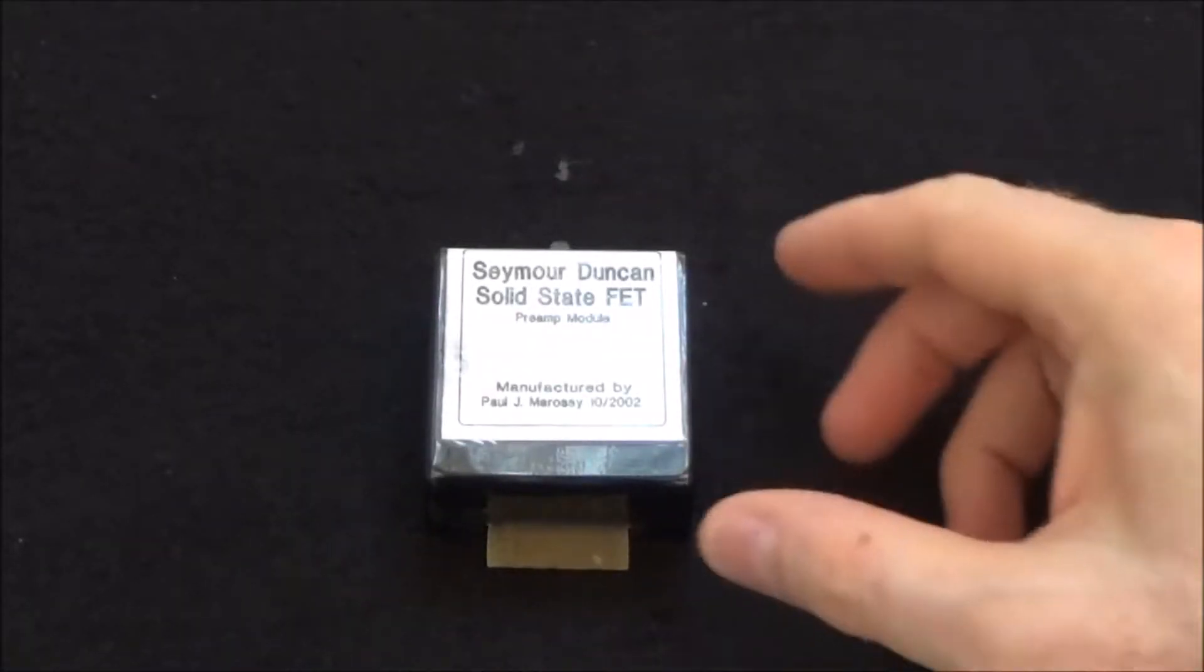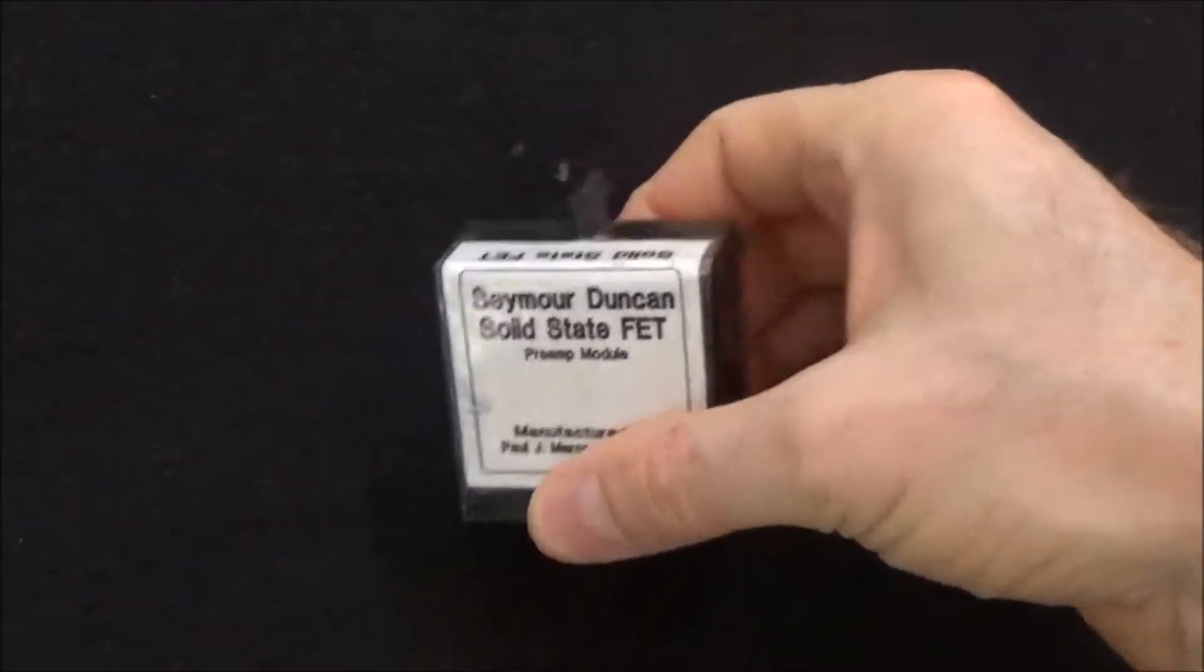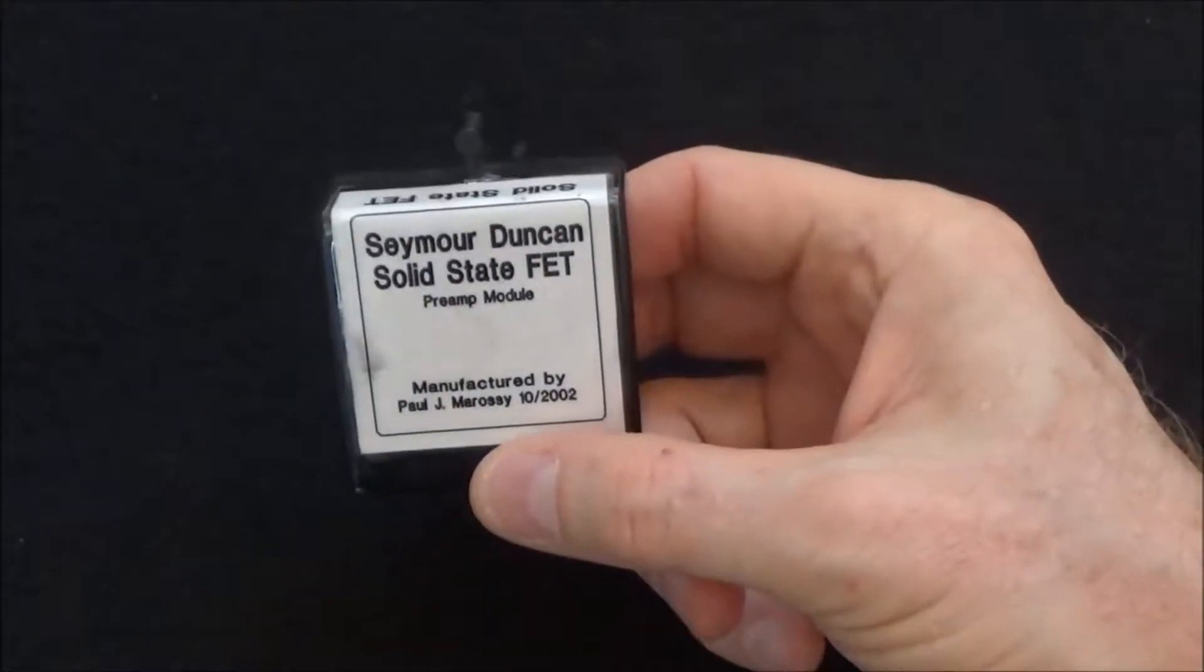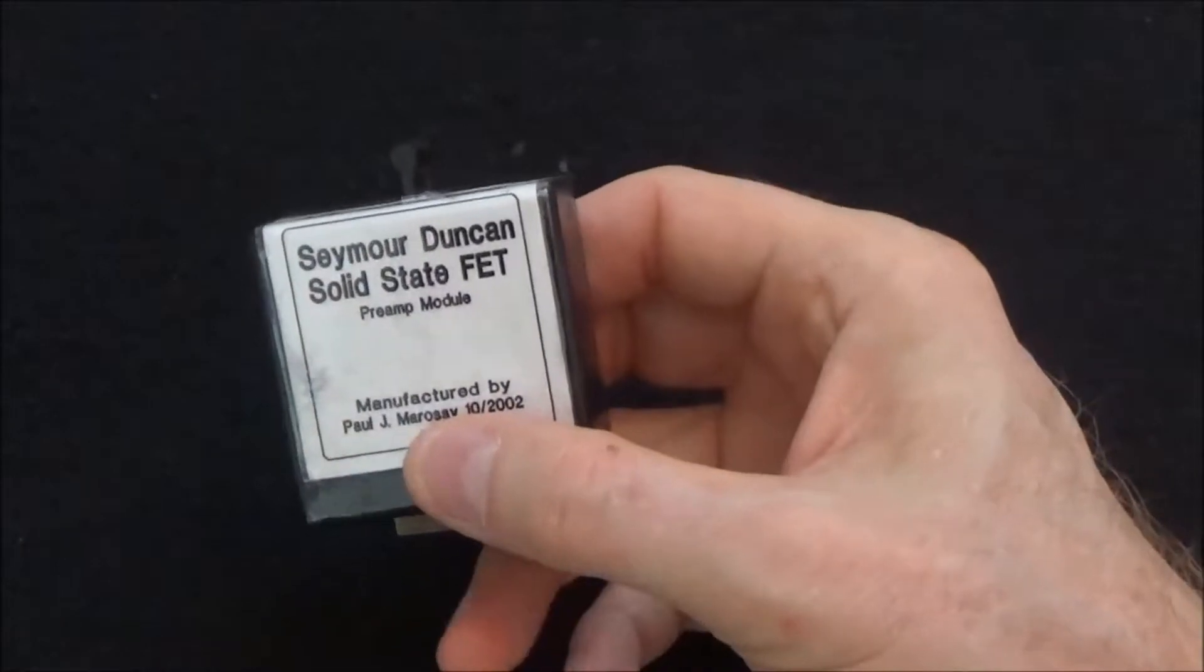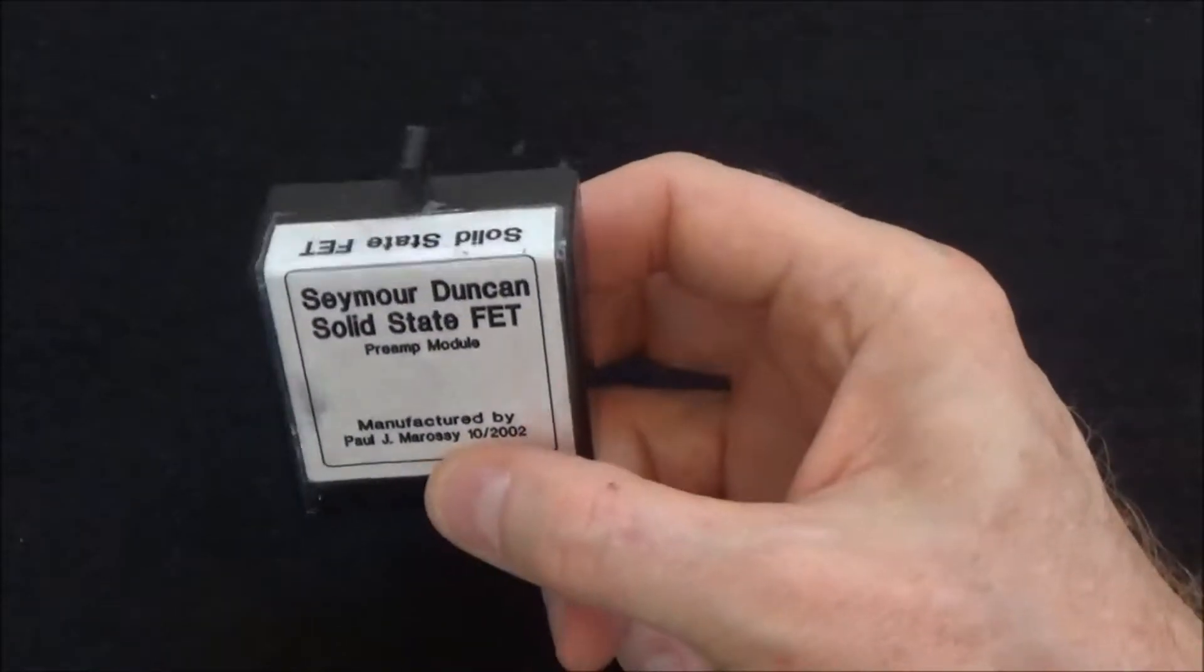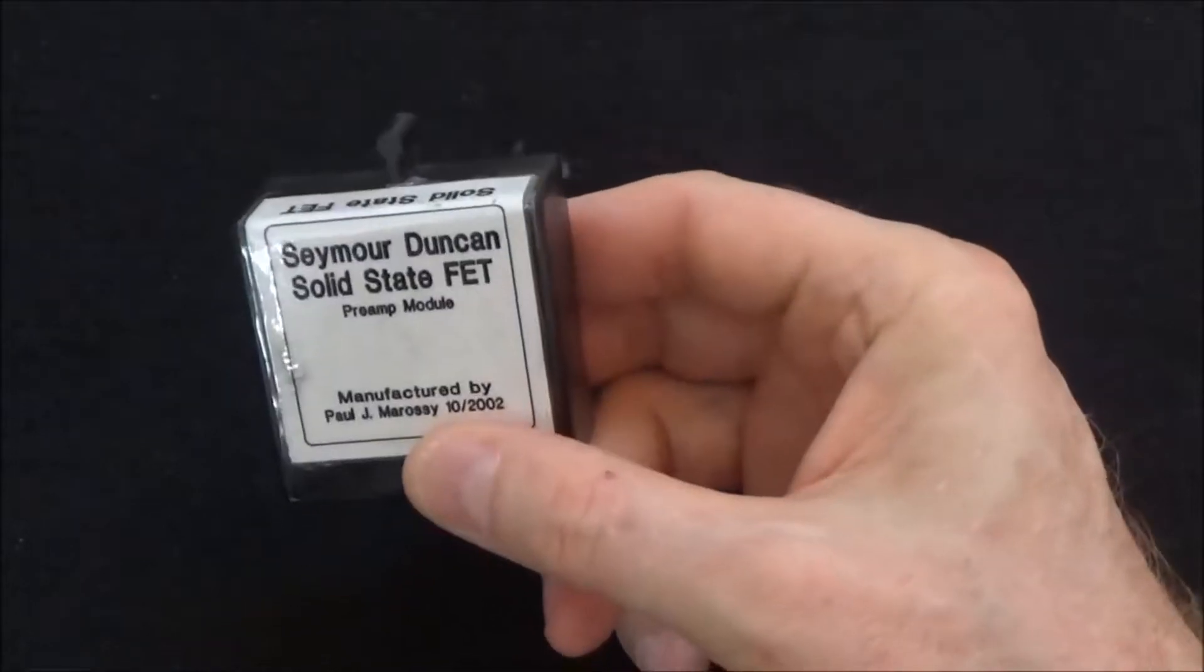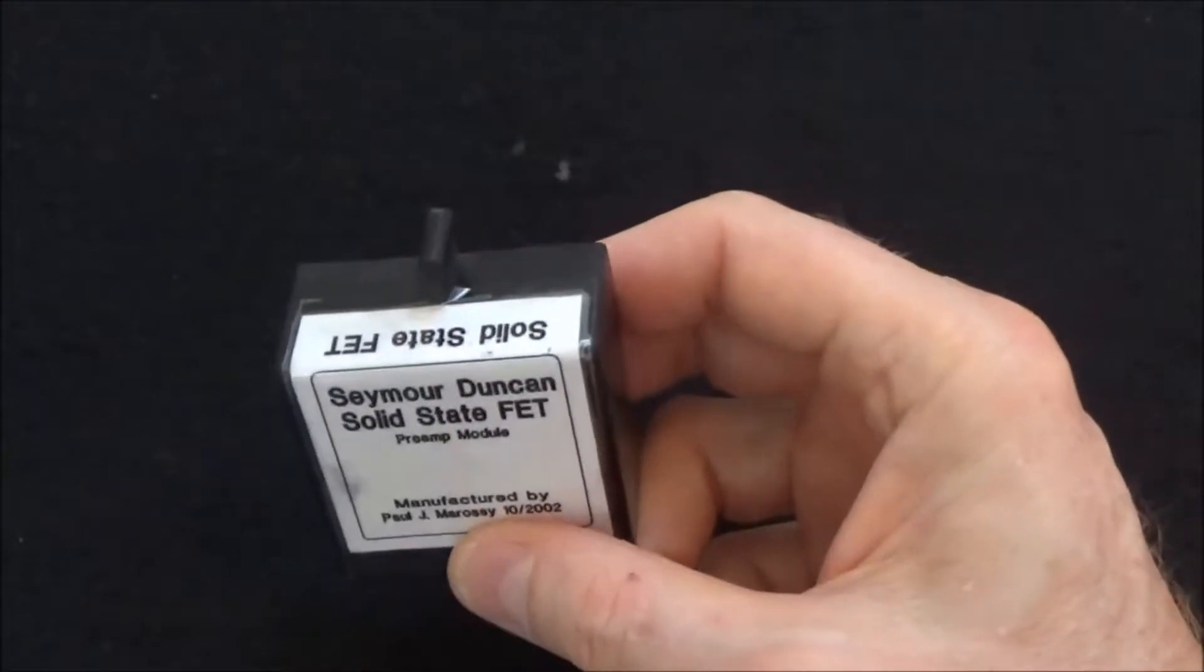Welcome back, here's episode number six of the Seymour Duncan convertible preamp module series. This is the solid state FET module. This one's a really rare bird. I found one on eBay, but at the time I just had a newborn baby and was on a really tight budget.